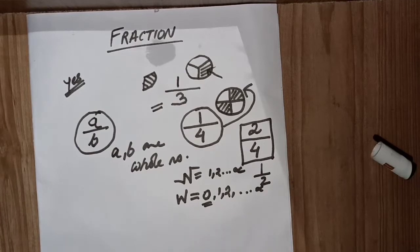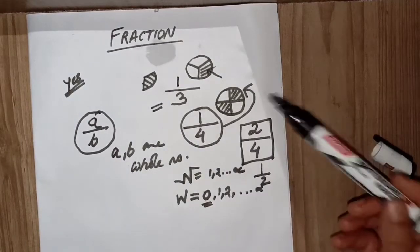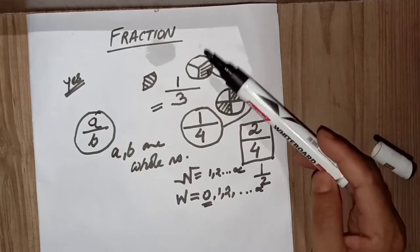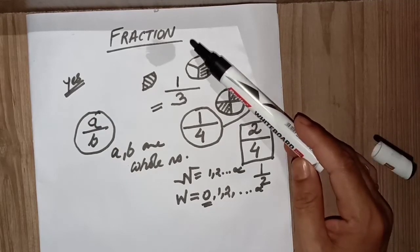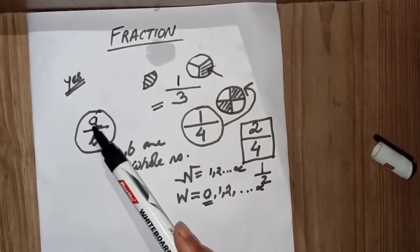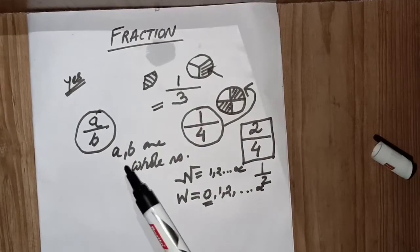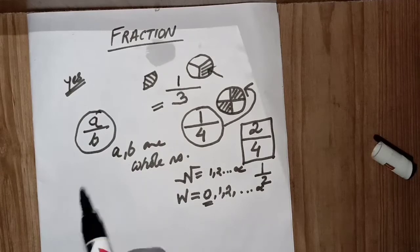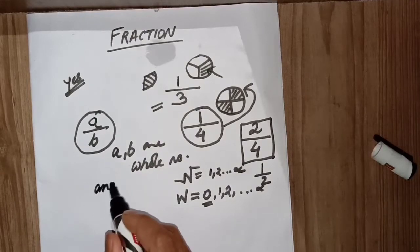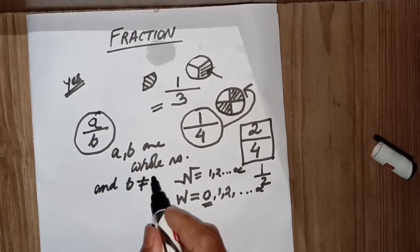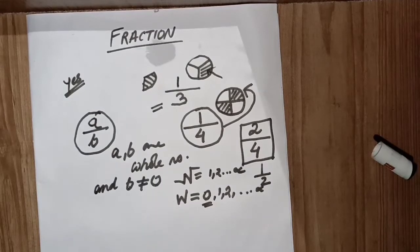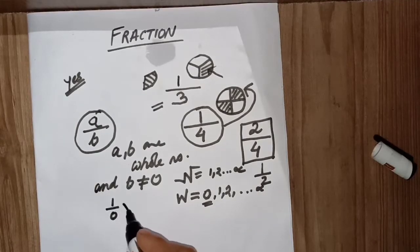Now let's come back to fractions. The definition of fraction: a fraction can be represented as a by b, where a and b are whole numbers, and b is never equal to zero. We cannot write a fraction where b is zero — for example, one by zero cannot be written.